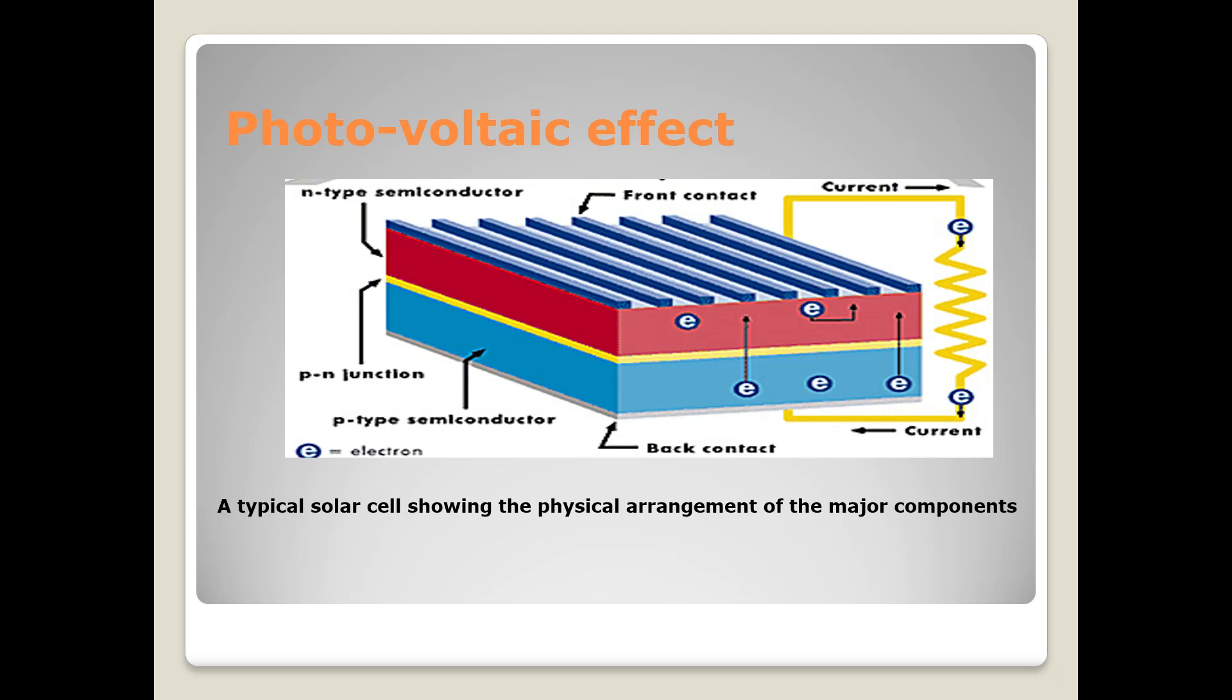Thus both free electrons and holes will be removed. The flow of electrons through the external conductor constitutes an electric current which will continue as long as more free electrons and holes are being formed by the solar radiation. This is the basis of photovoltaic conversion, that is the conversion of solar energy into electrical energy.